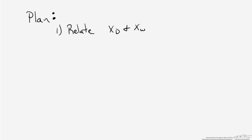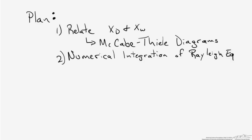Our overall plan is to first find a relationship between the distillate and the reboiler compositions by constructing a McCabe-Thiele diagram. Then we're going to take that information and plug it into a numerical integration of the Rayleigh equation using Simpson's rule.